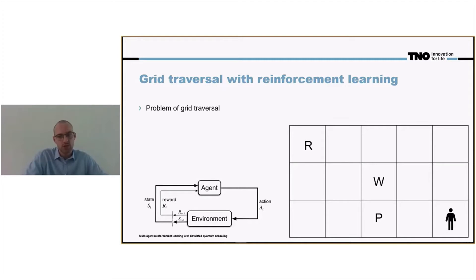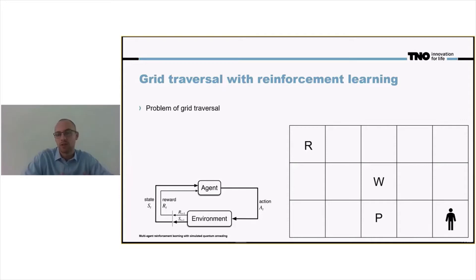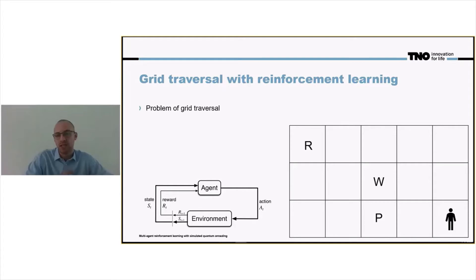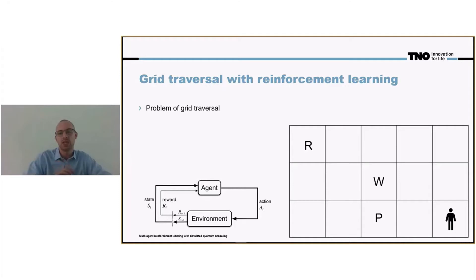It basically comes down to: you are in a specific location, you take an action, and you get feedback from that action from the environment. For instance, it was a good action if you reach the reward or get closer to it, or it was a bad action if you end up in the penalty state, in the P state.